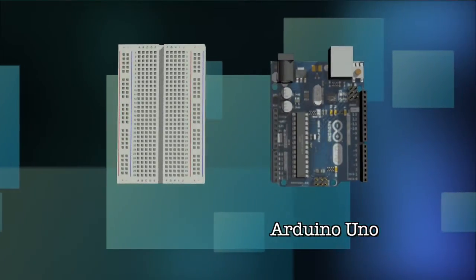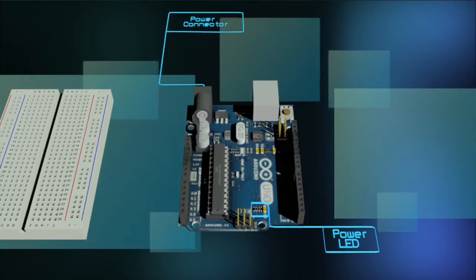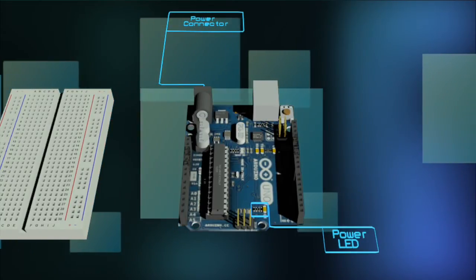The Arduino Uno has several different parts. The power connector is how you power your Arduino when it's not plugged into a USB port for power, and it can accept voltages between 7 and 12 volts.